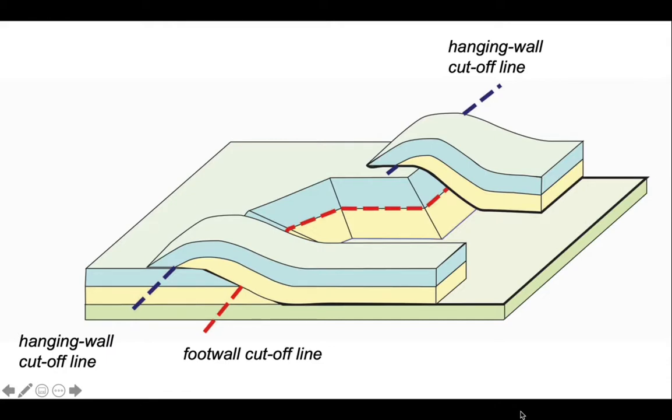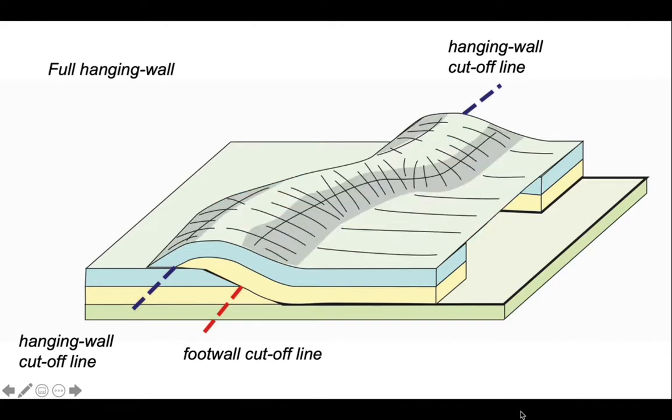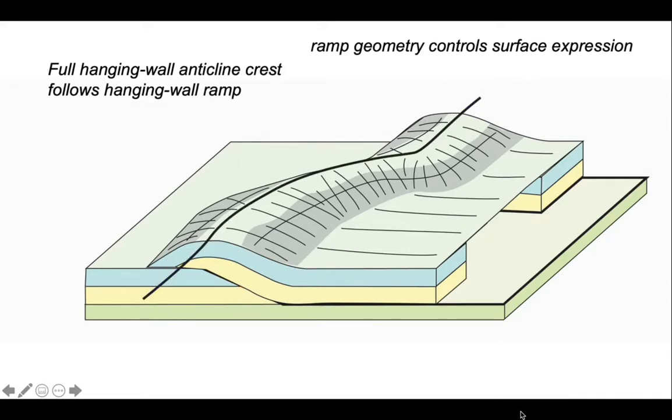Let's fill in the rest of the hanging wall fold shape. This is the full hanging wall. The hanging wall cutoff line will lie beneath this fold structure, poking out at the ends of the model. Notice that the hanging wall anticline crest follows the shape of the hanging wall ramp. The ramp geometry controls the surface expression of the thrust sheet.